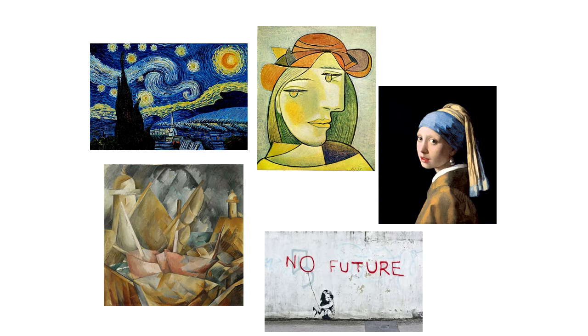The other group of six artists were presented using interleaved or mixed instruction, where students might be shown one painting by Van Gogh, then one by Picasso, then Vermeer, then Brock, then Banksy.